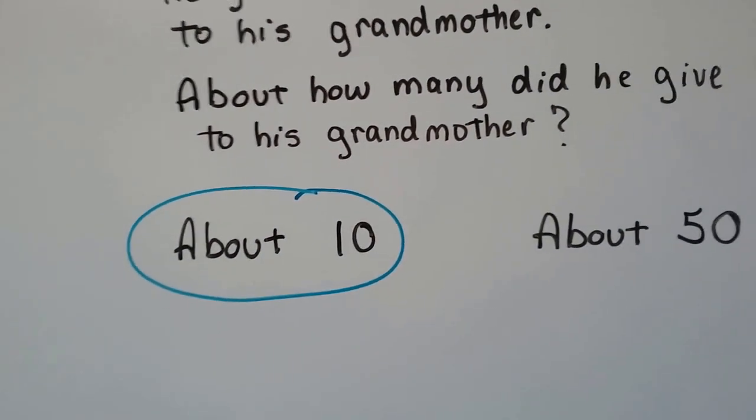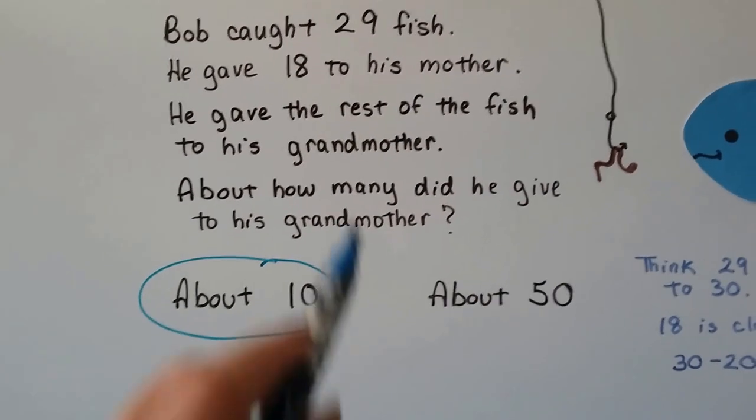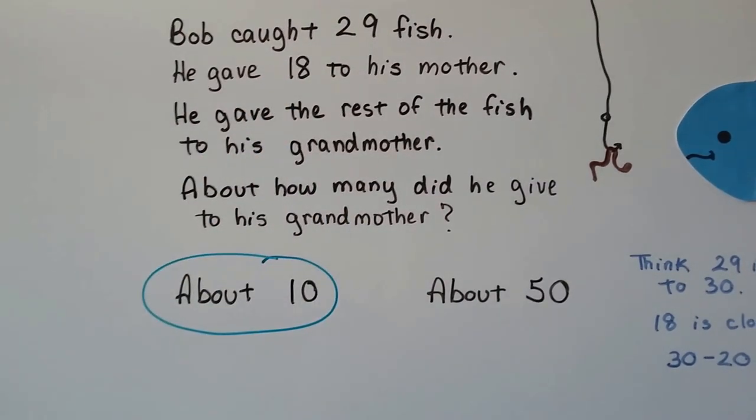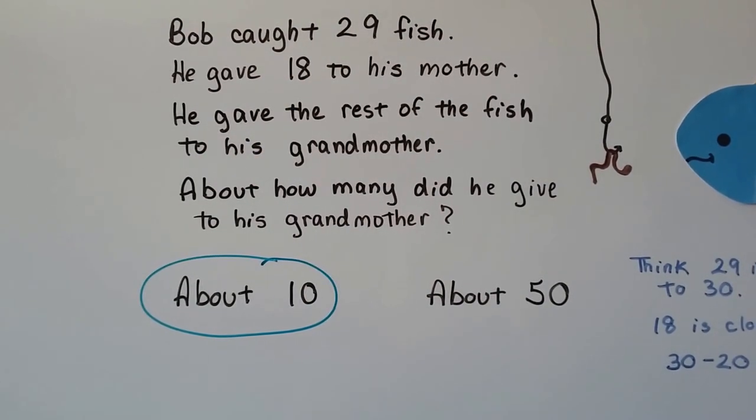That would be the correct answer. 50 would be too many. He only had 29, and if he gave 18 to his mother, he wouldn't have more. He wouldn't have 50, would he? That doesn't make sense.